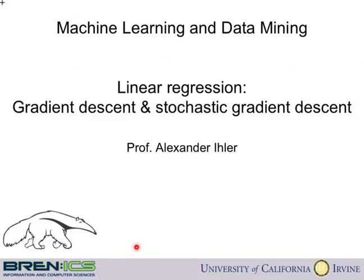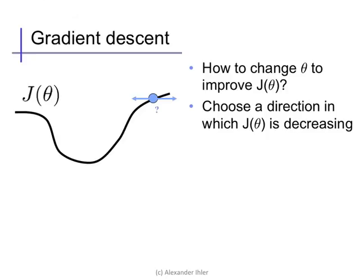A basic toolset for optimization in machine learning are gradient-based methods. They're simple, easy to use, and very widely applicable.